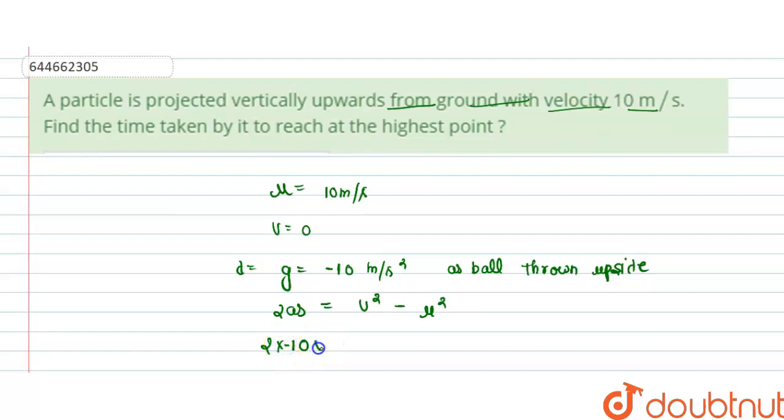And this is v. v is 0, so we put 0 squared minus 10 squared.